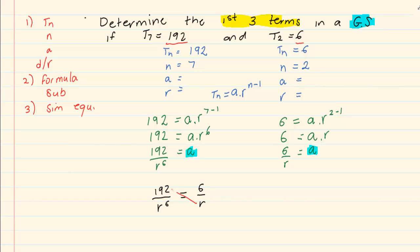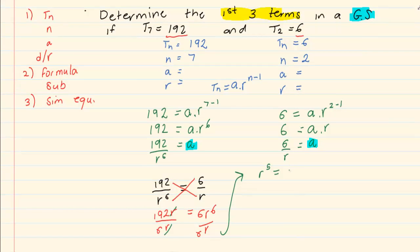We now have 192 over R to the power of 6 is equal to 6 over R. Now we are going to cross multiply. If you are not familiar with this concept, then you need to go to our video under Common Errors because this is a very common mistake. So we now have 192R is equal to 6R to the power of 6. If we divide by R and we divide by 6, we would have R to the power of 5 is equal to 32. R would equal to 2.